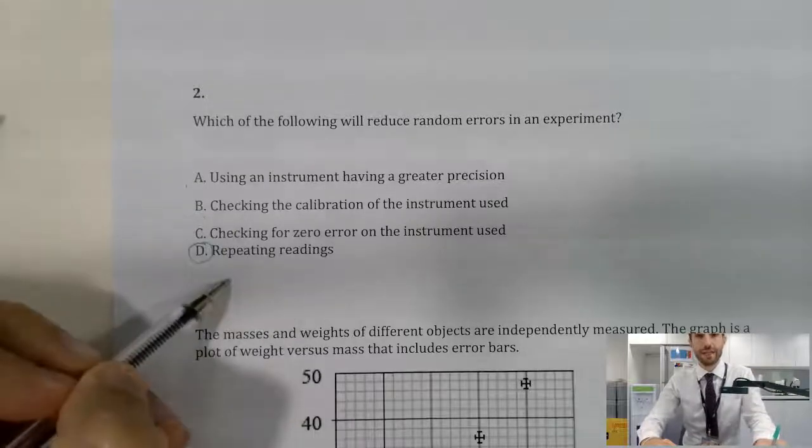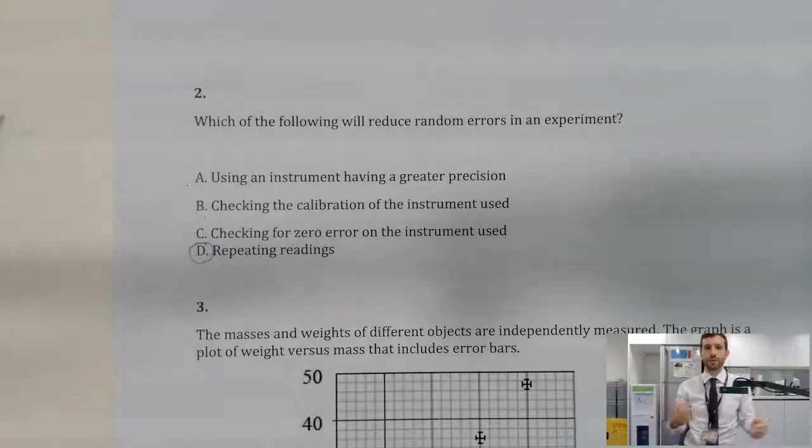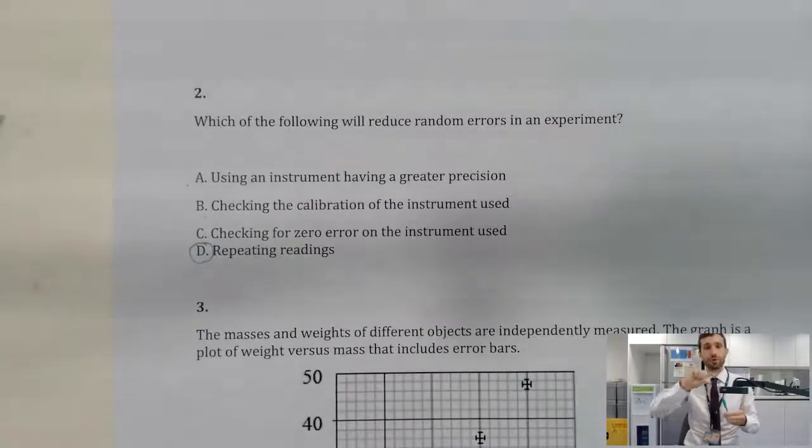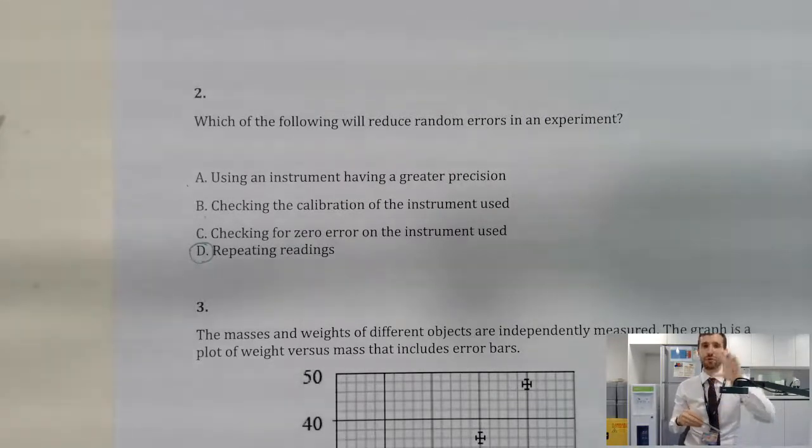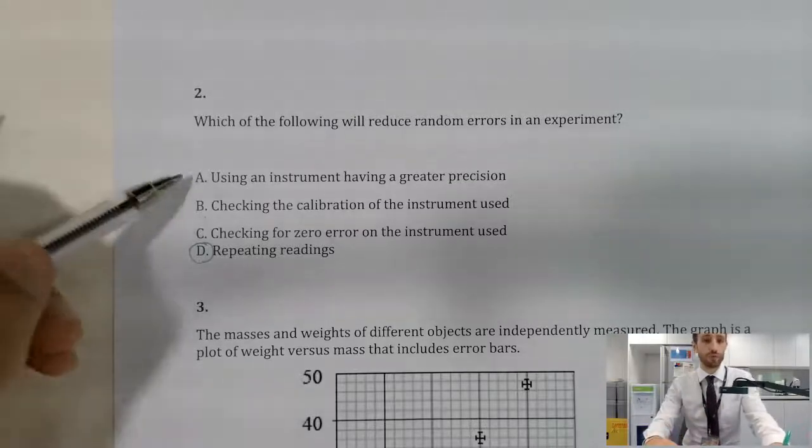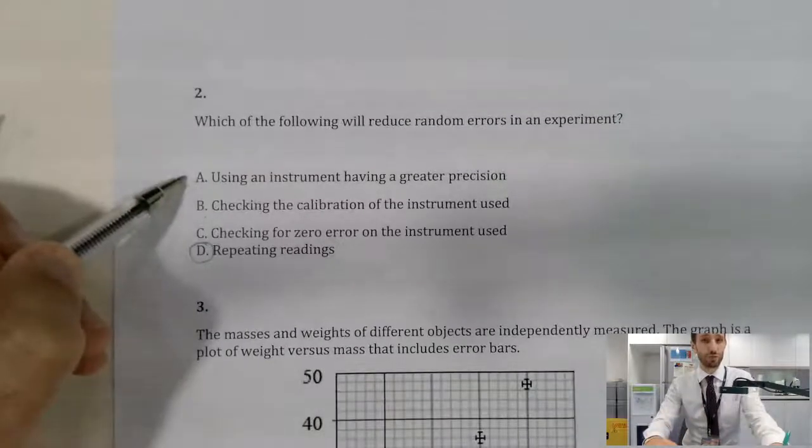Well, repeating readings allows for the randomness of random error. Remember, repeated readings whenever you're reading something over time or if you're measuring the diameter in different locations of a ball, for example, repeating that allows for the random fluctuations. What you want to do is do the same experiment multiple times in order to reduce random error. Having greater precision gives me more information, more significant figures, but doesn't necessarily reduce the random error.